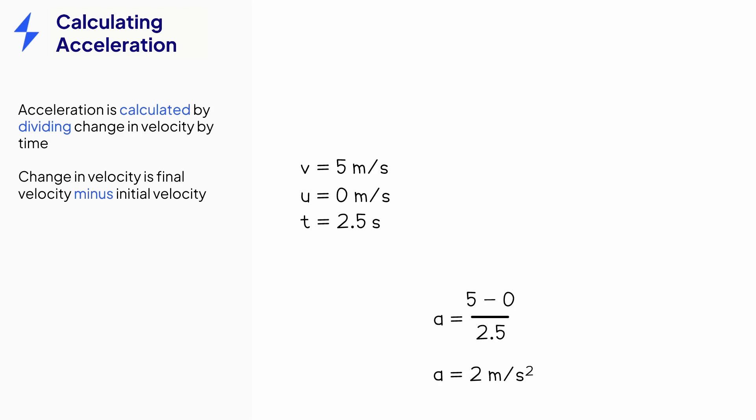A few things to note. Change in velocity can also be negative. For example, if initial velocity is greater than final, which means the object is slowing down. In this case, the object has negative acceleration. This means it is decelerating.